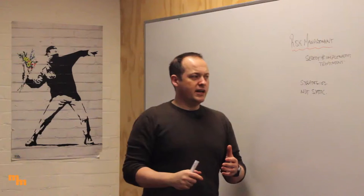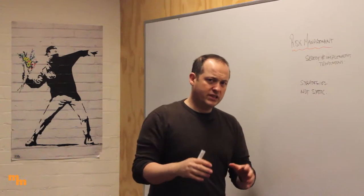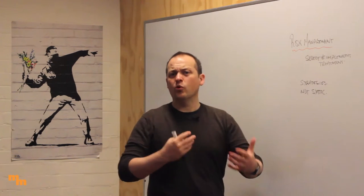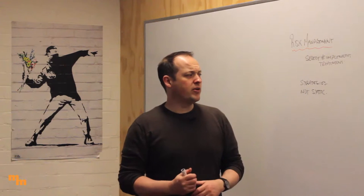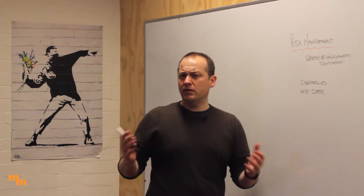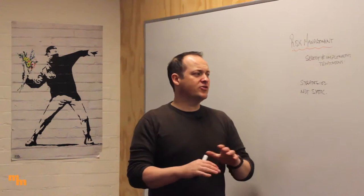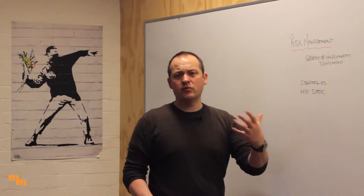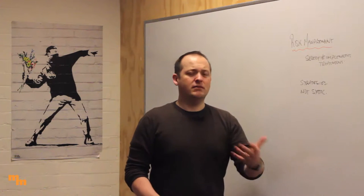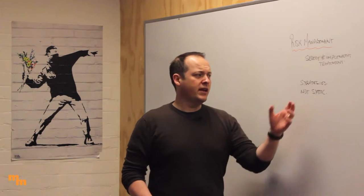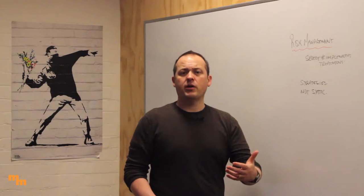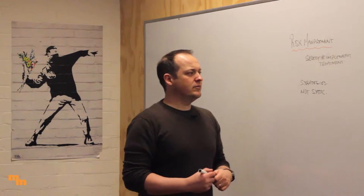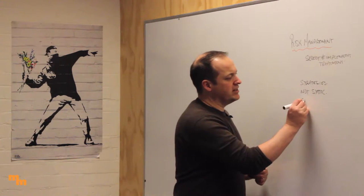Remember that the organization is not static. We've put these things in place now, but we need to continually be aware that the organization is always shifting and changing — new customers, new products, things are always changing around us. It's not set in stone. Our risk treatment plans need to bear in mind that things are going to change, and they need to be reviewed on an ongoing basis. It's really a circular process.